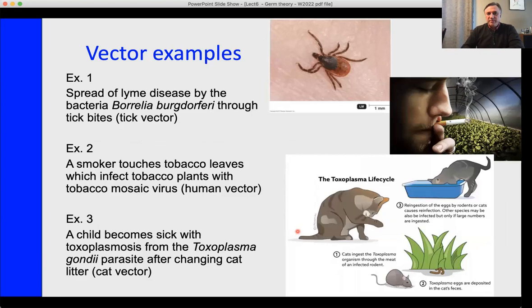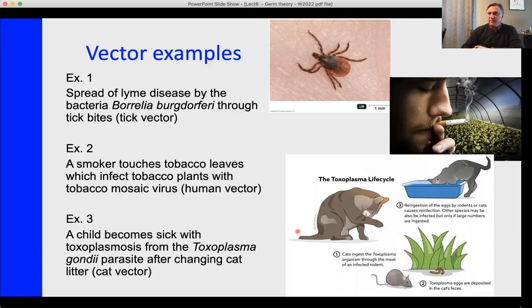The transmission of Lyme disease is one example. Another example is a smoker leaving tobacco mosaic virus from his cigarettes to other healthy plants. A third example could be cats acting as a vector in the Toxoplasma life cycle, where a mouse could be infected with a parasite that causes toxoplasmosis. Toxoplasma gondii is in the mouse, the cat eats the mouse, the cat then sheds feces carrying the parasite. The cat has acted as the vector, and if somebody were to change the cat's litter box, they could be exposed to the parasite. Those are examples of vectors.